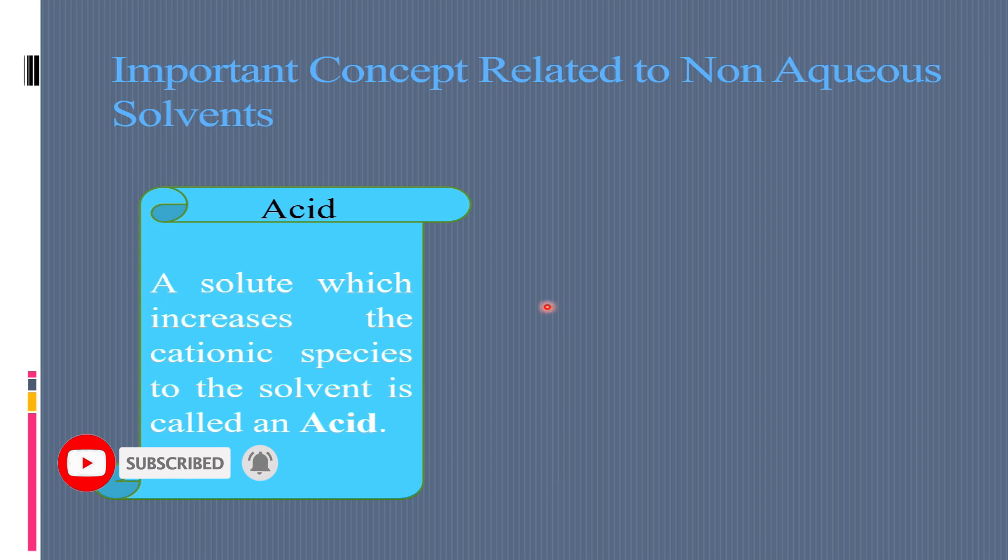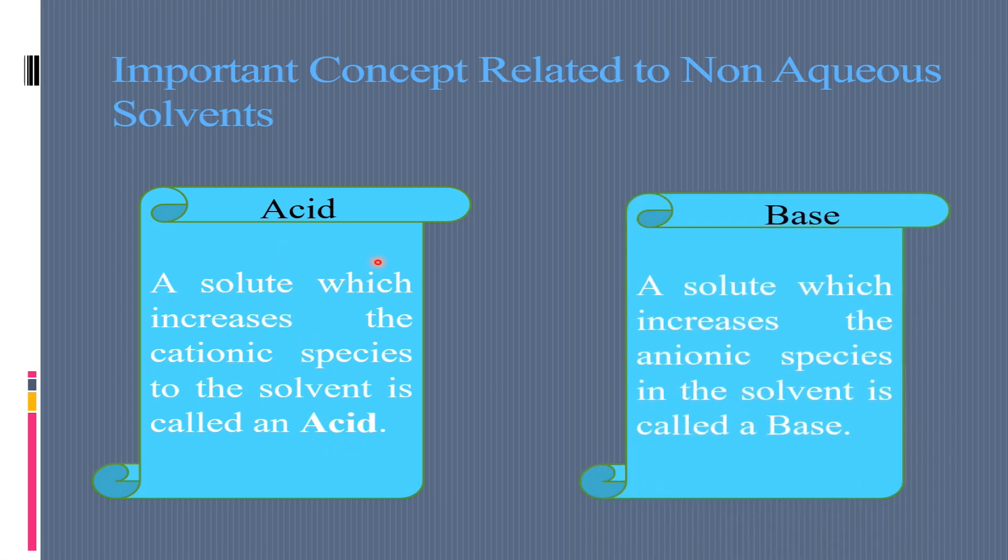Important concept related to non-aqueous solvents. Acid or solute which increases the cationic species to the solvent. This is called an acid. And a base is a solute which increases the anionic species in the solvent. This is called a base.